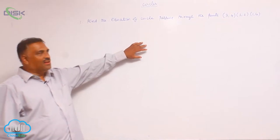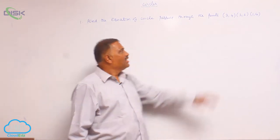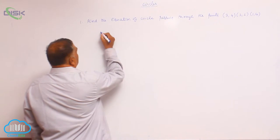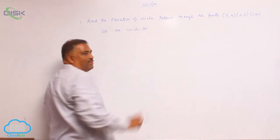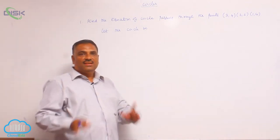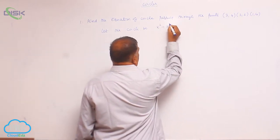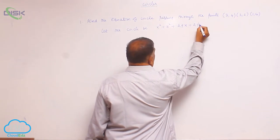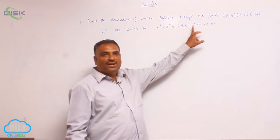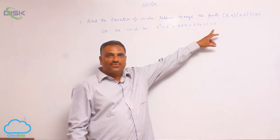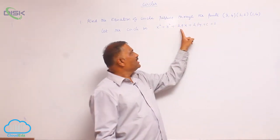This is a problem related to our basic concepts: find the equation of the circle passing through three given points. Let the circle be represented by the general equation of the circle — we should always take the general equation only. So: x² + y² + 2gx + 2fy + c = 0. We observe that there are three constants: g, f, and c. That is why you require three conditions to find out these unknowns.